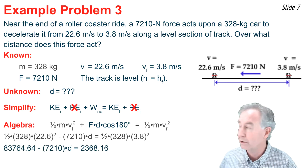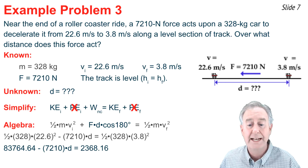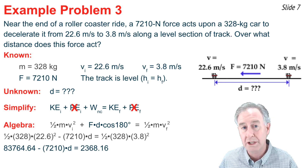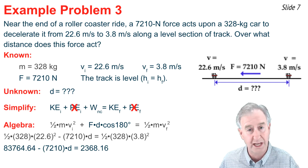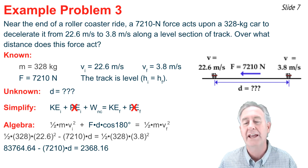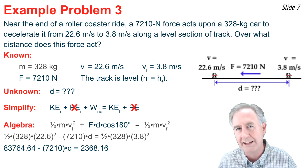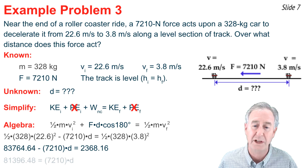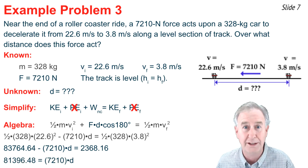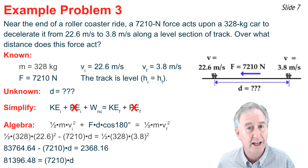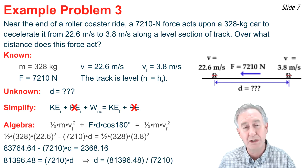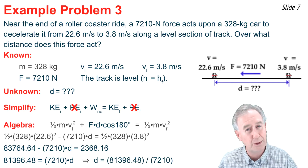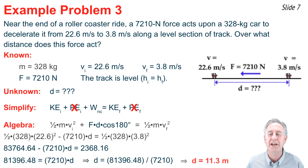Expanding the three-term equation with ½mv² and F·d·cos(θ) and substituting known values, the cos(180°) = −1 makes the second term negative. Evaluating each term on a calculator, then isolating the d term by adding and subtracting from both sides, and finally dividing through by 7210, gives a skid distance of approximately 11 meters.